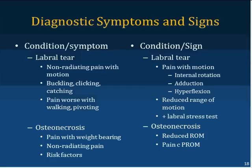Labral tears are hard to diagnose. The classic symptoms are non-radiating pain with motion — not radiating to other parts of the body — along with buckling, catching, or clicking with hip motion. This is probably more common than we thought. The pain is worse with walking or pivoting, and particularly with a specific stance or gait. Signs include pain with internal rotation and adduction as well as hyperflexion, essentially exceeding the possible range of a torn labrum and putting pressure on a damaged area.